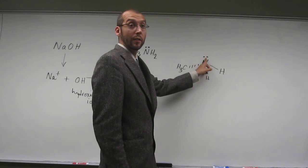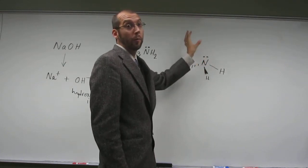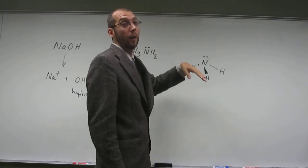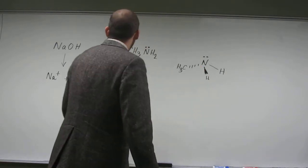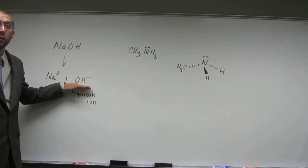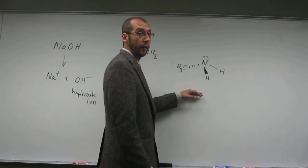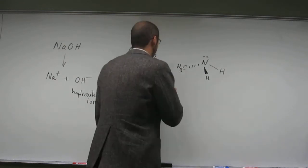But what this lone pair can do, right, is accept a proton. So, since that can accept a proton, we call it a base. But it doesn't have an ionizable hydroxide ion on it. So, what we call it is not a strong base, but a weak base.